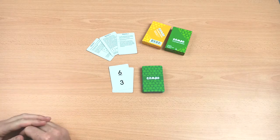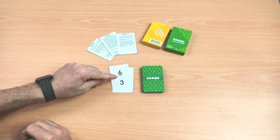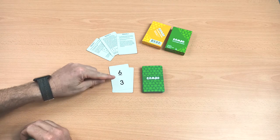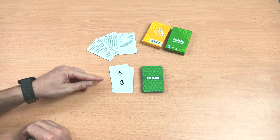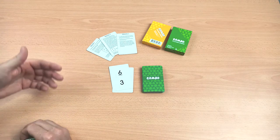This becomes the new card that everyone has to work off. So they might have to say six and three is nine, six take three is three, three sixes are eighteen, six divided by three is two, and place the card.